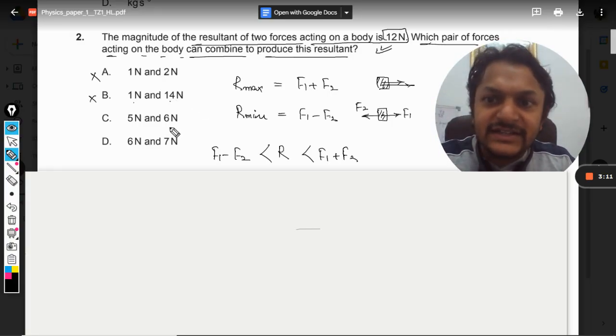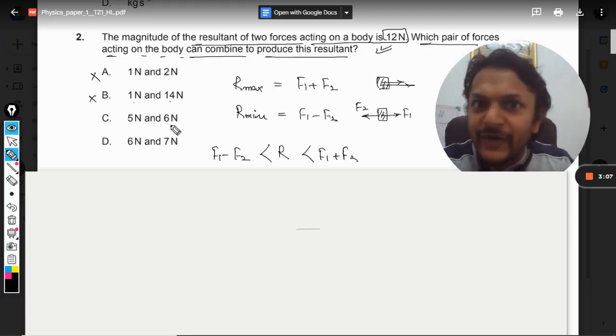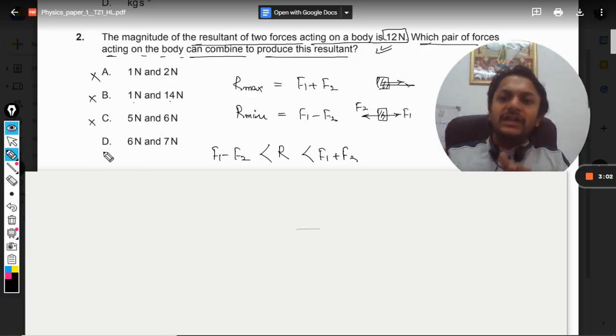Now, what about 5 and 6? See, the maximum value these two forces can produce is 6 plus 5 which is 11. We want 12. So even this is wrong.